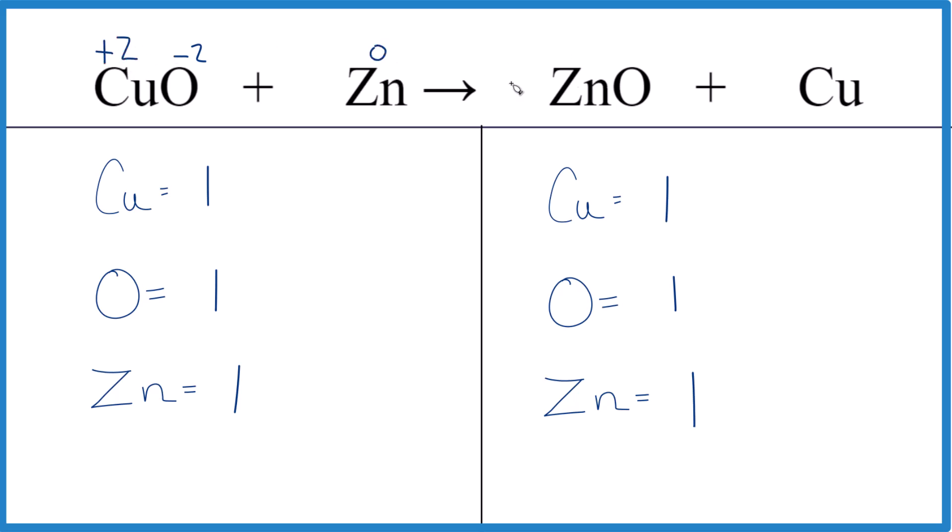Over here is zinc. That's a metal. And copper, those are solid metals. So those will be zero. Oxygen is always minus two, and the zinc is going to be plus two.